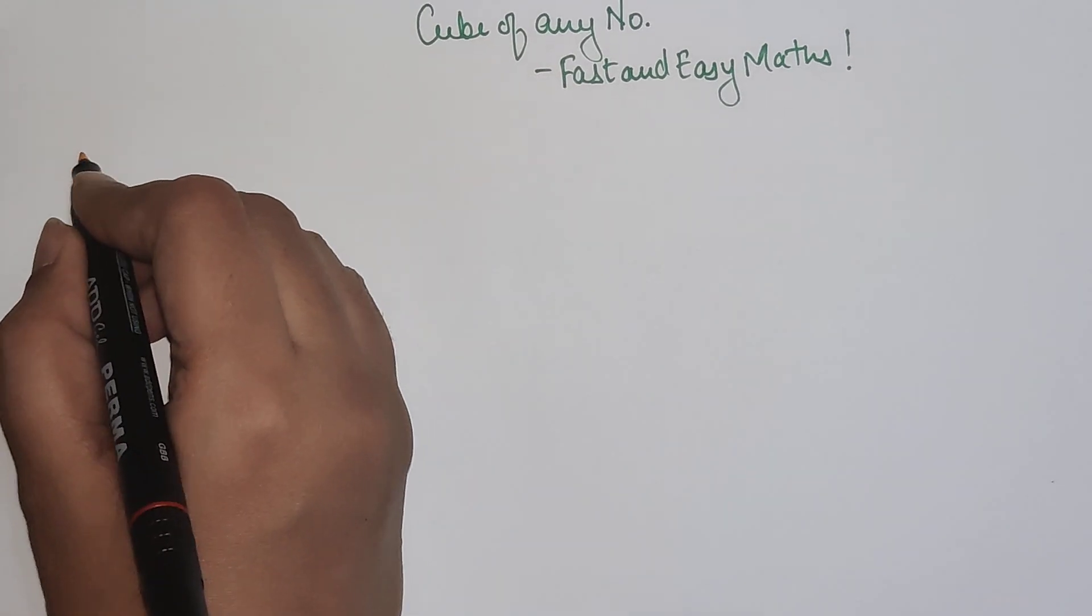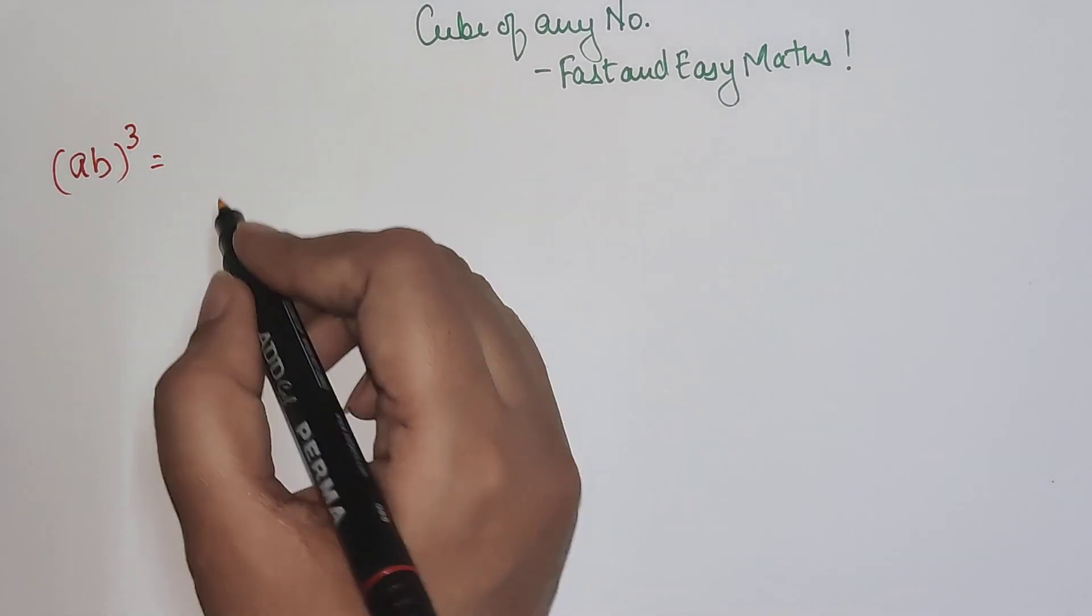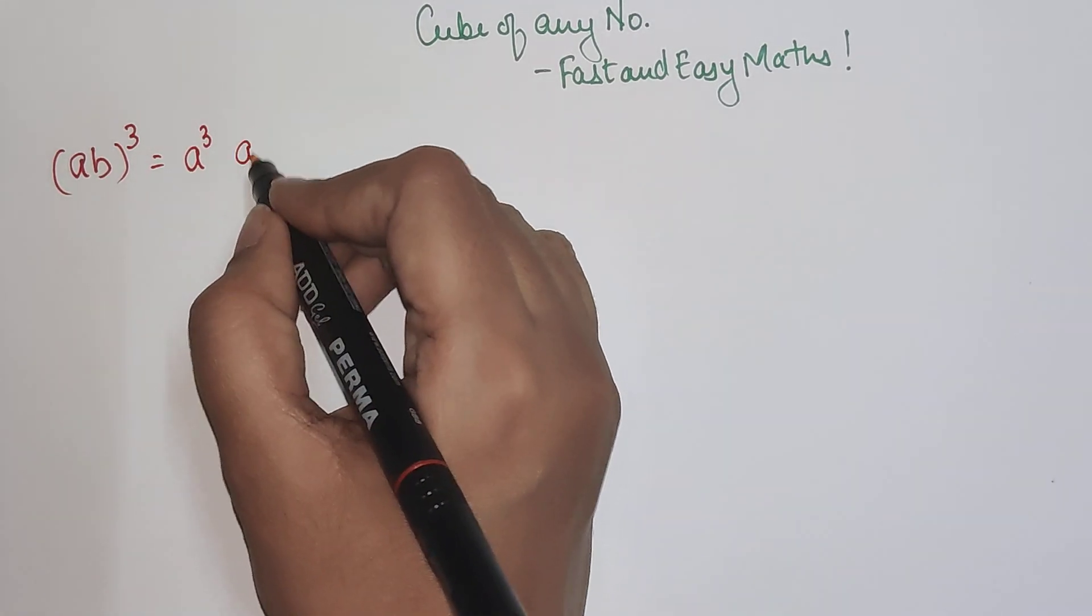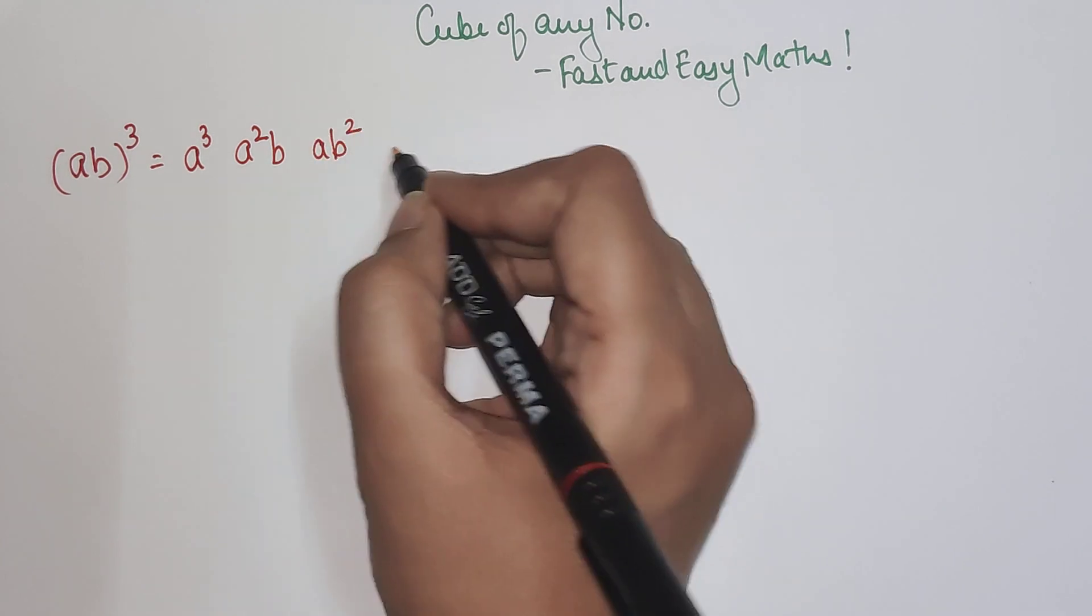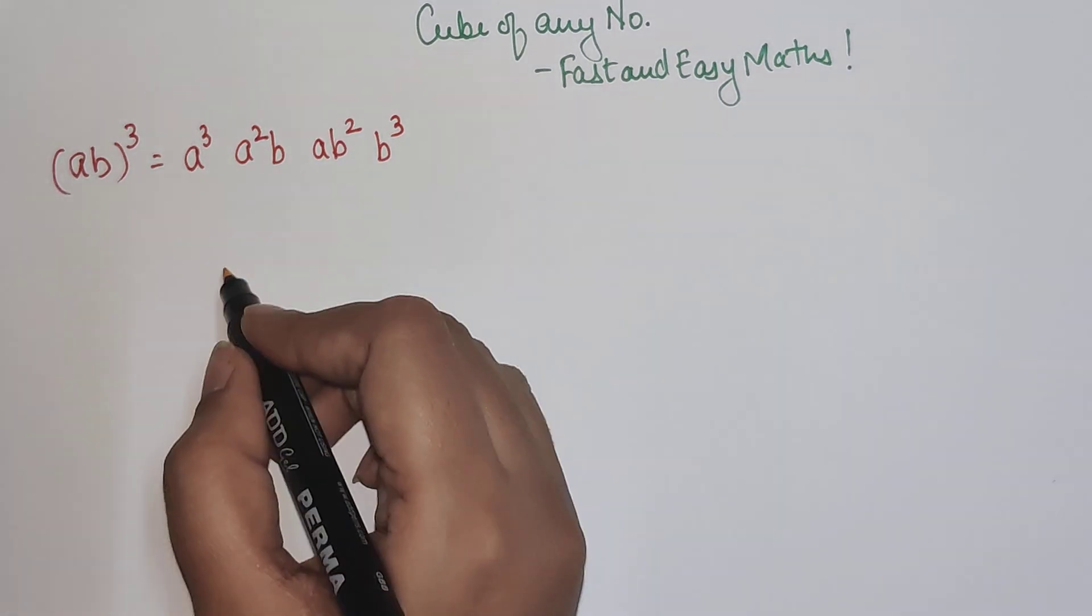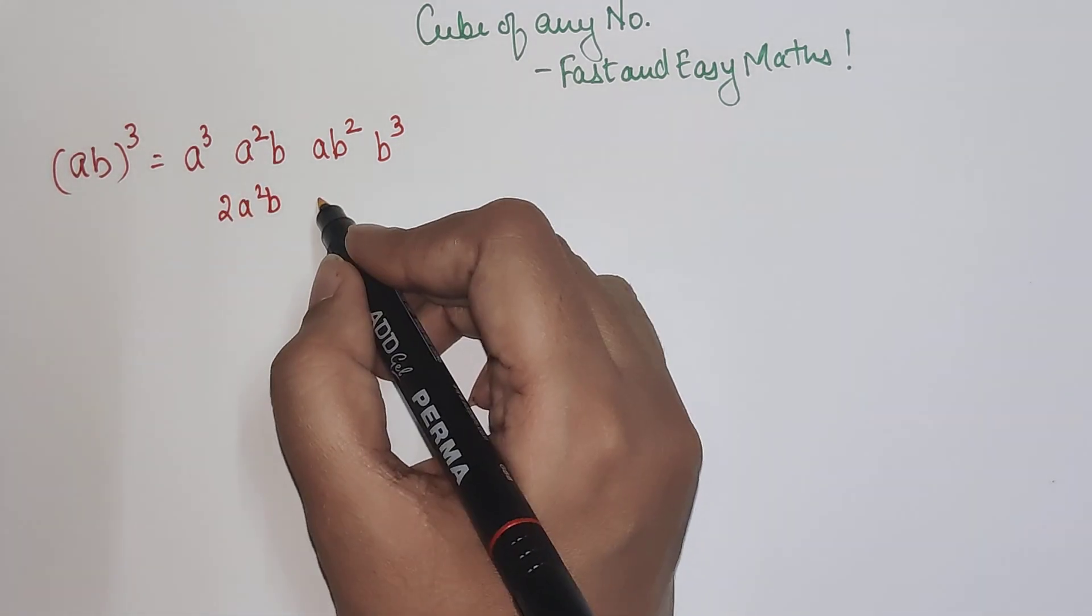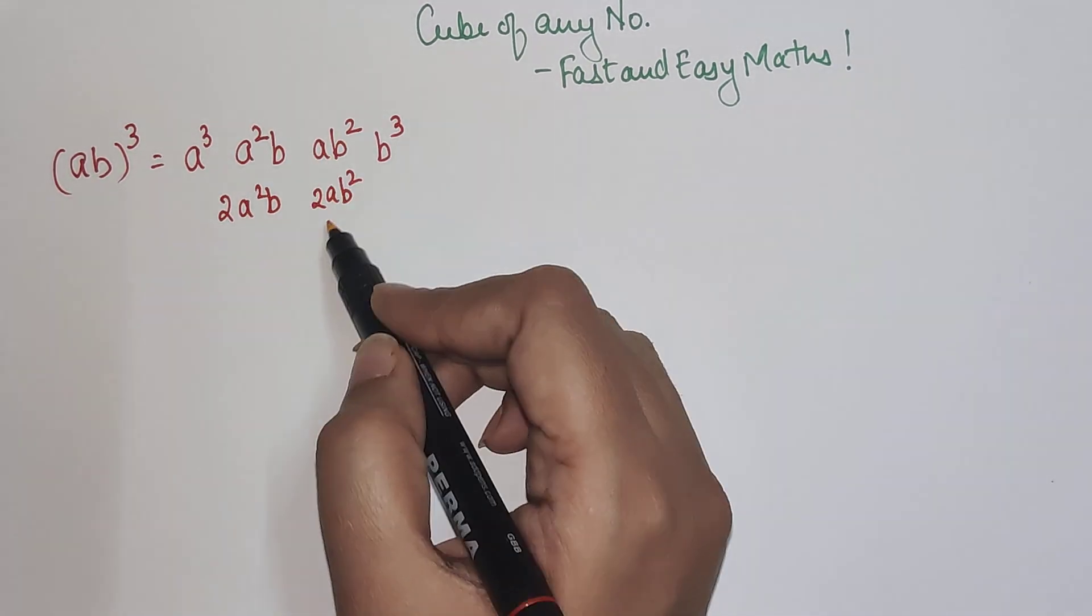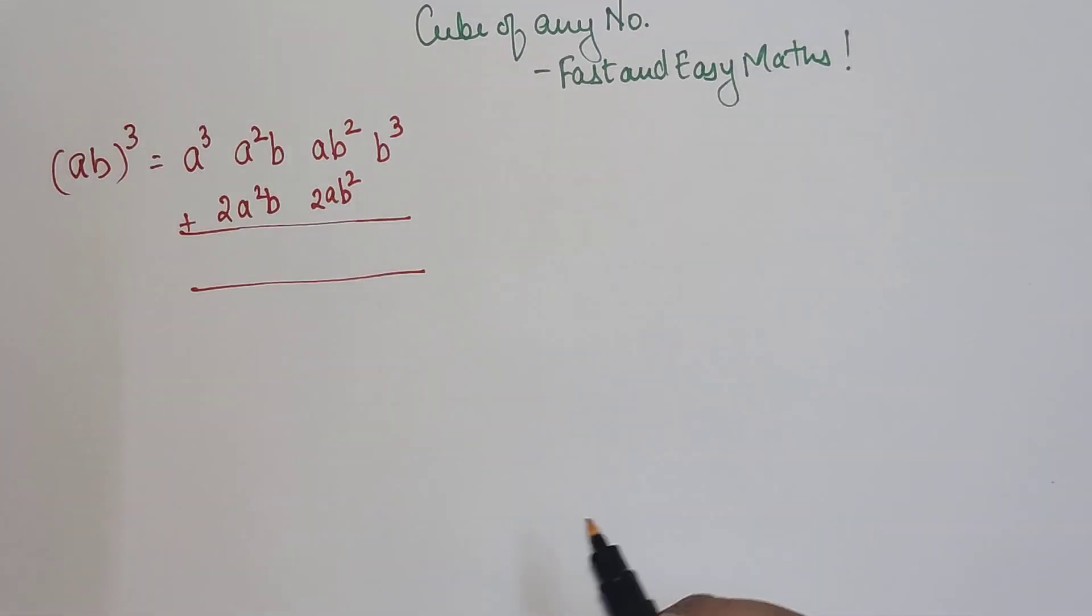But like all tricks, you need to practice this trick as well. So all you have to do is, if you have a number, let's say it's ab, you write a³, then a²b, then ab², then b³, and then you multiply this value by 2. Similarly you multiply this value by 2, and then you add all of it and you will get your final answer.